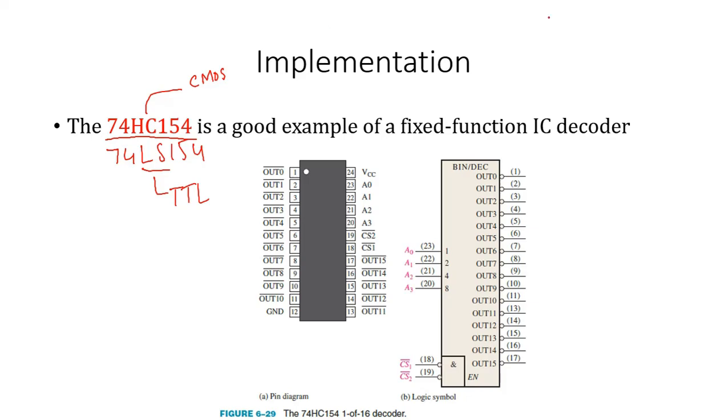This IC has the pin diagram shown here where you have 4 bit inputs and from 0 to 15 outputs shown as from 0 to 10 at this side and from 11 to 15 this side. You have two inputs for enable, CS1 bar and CS2 bar.